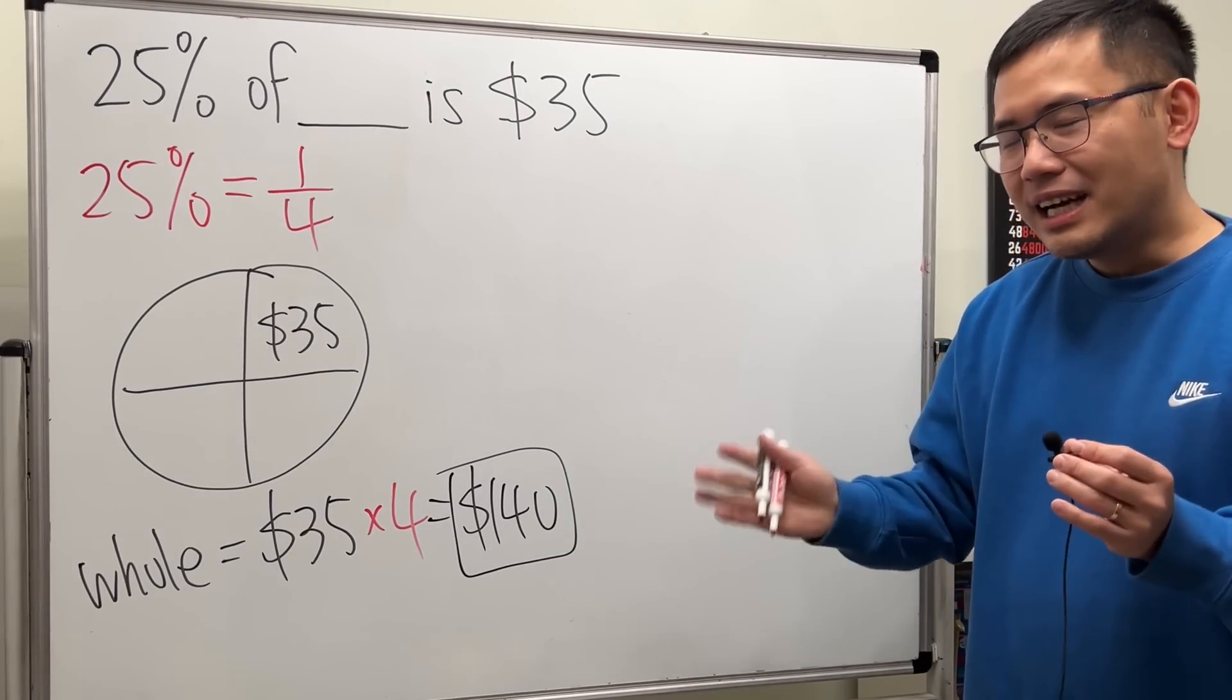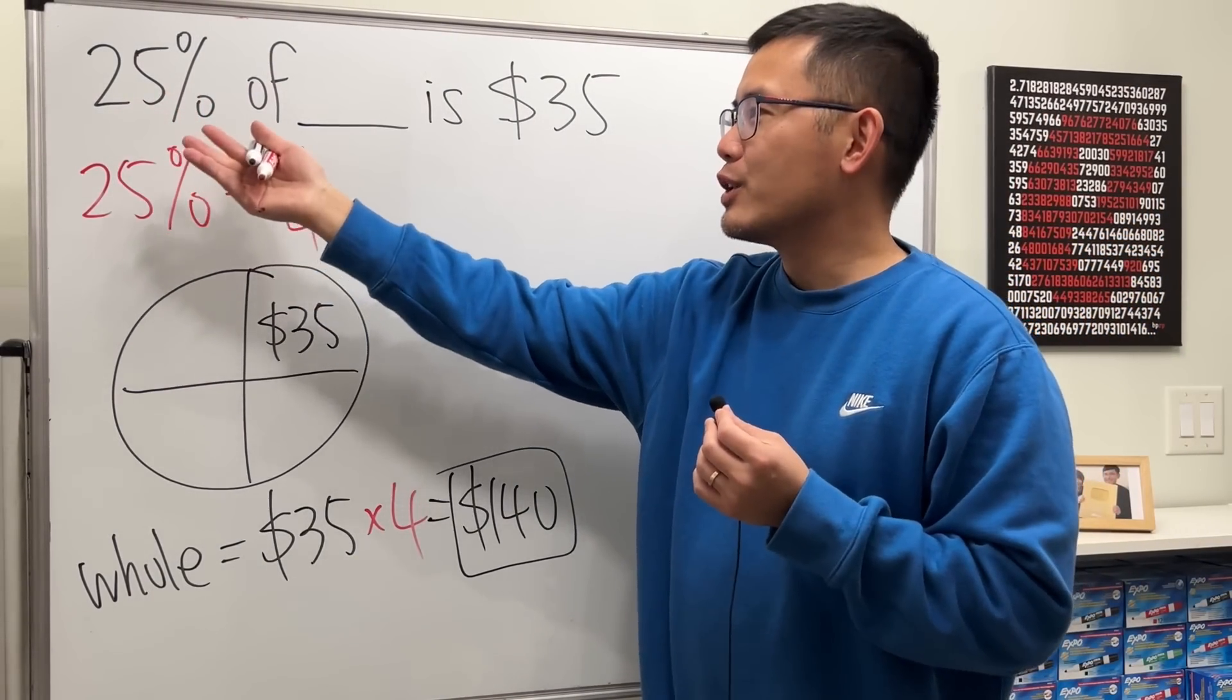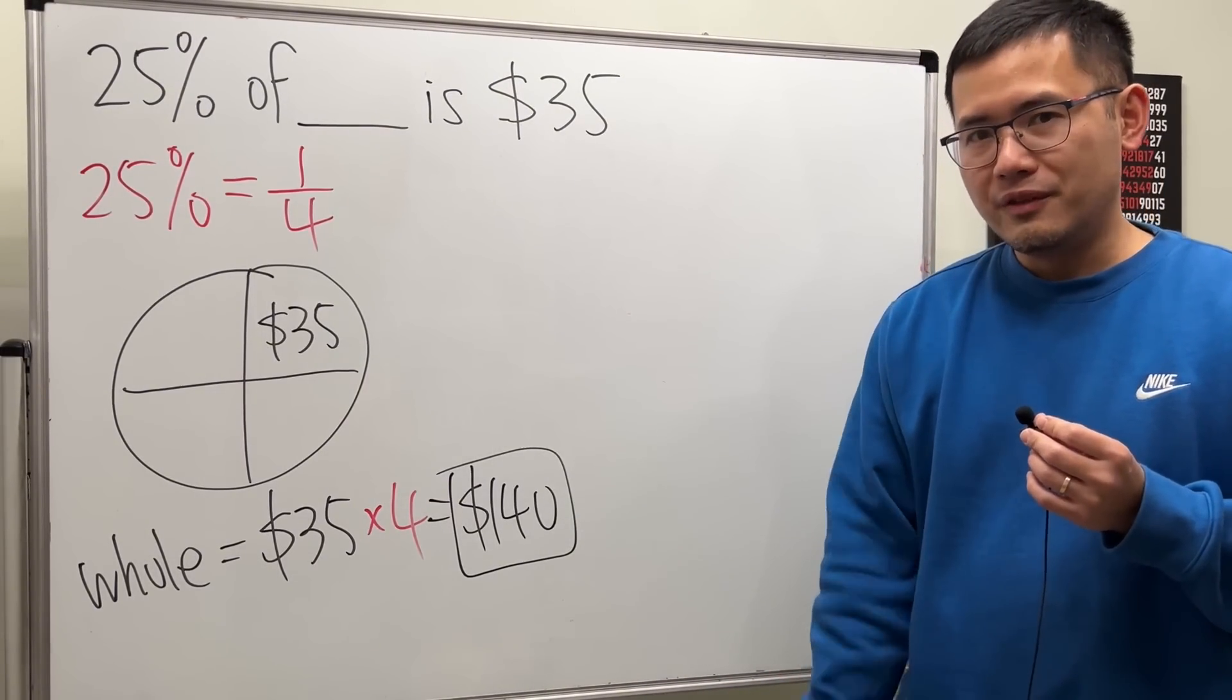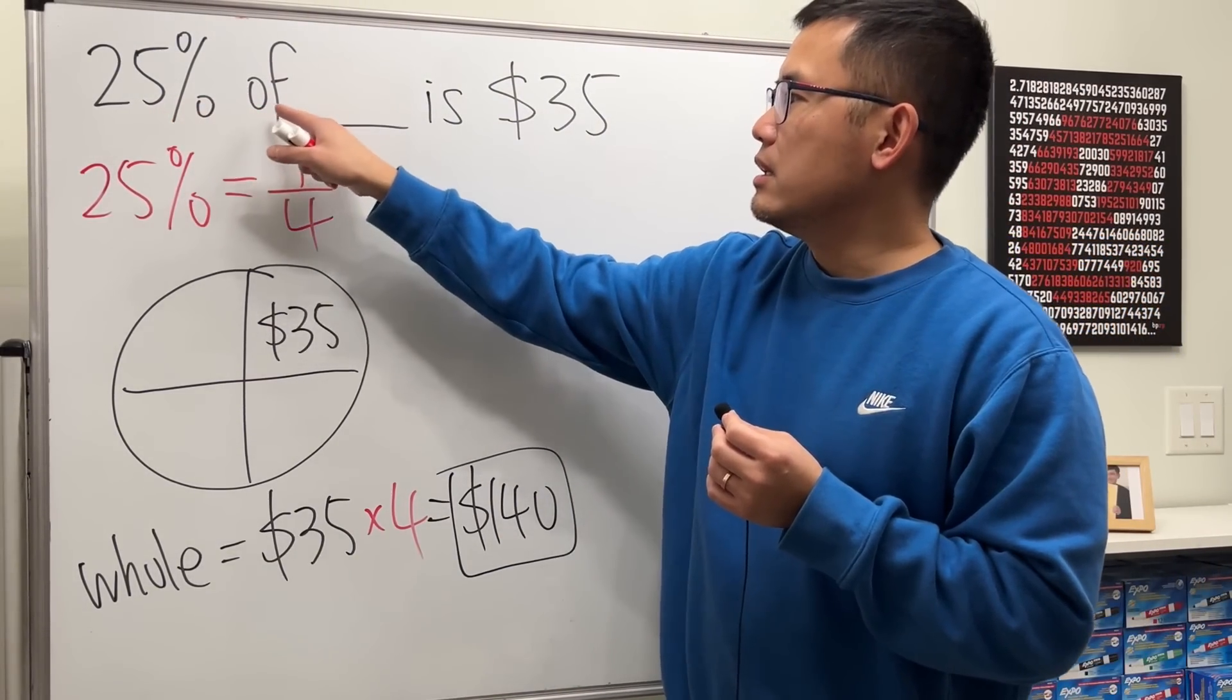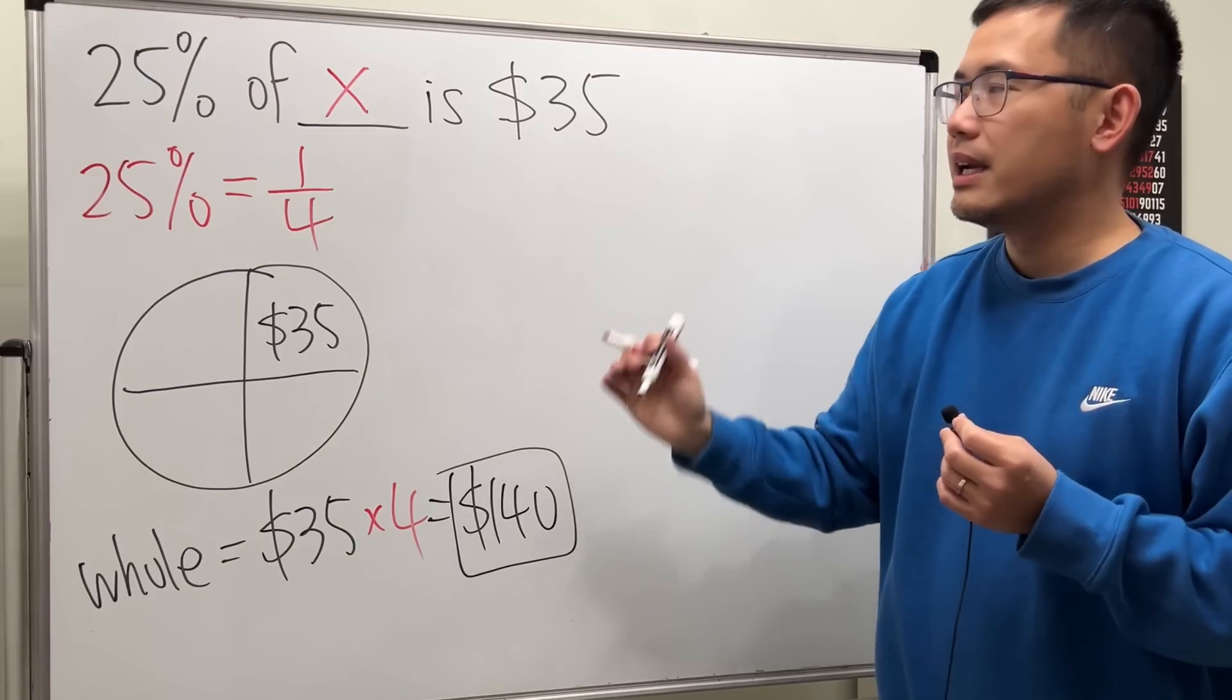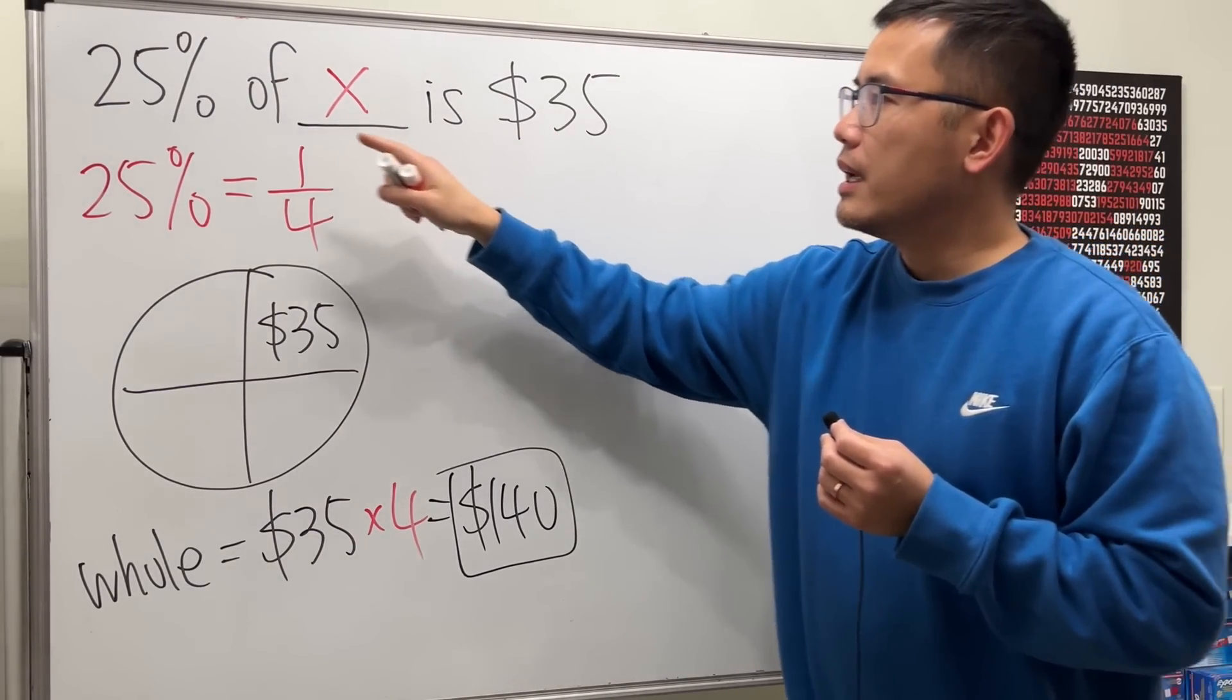However, sometimes we might not be dealing with nice percentages like 25% or 20%. So it's also beneficial if we look at the algebra way to do it. 25% of something we don't know—let's just call that x—and we know that result is equal to 35.